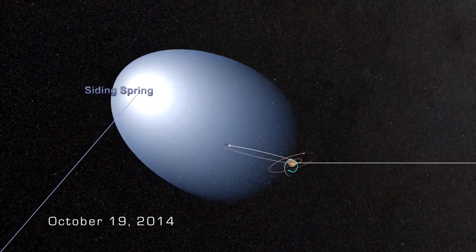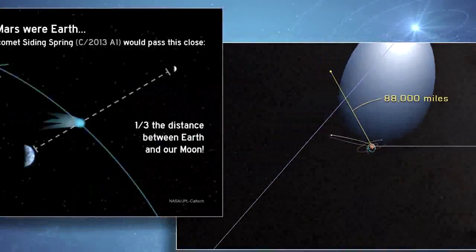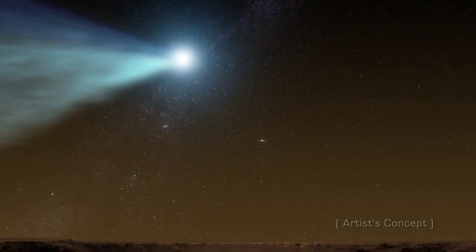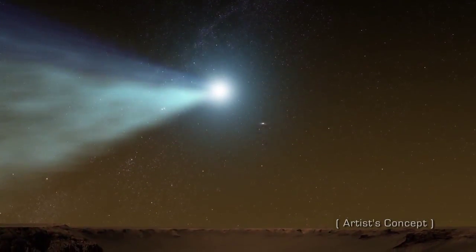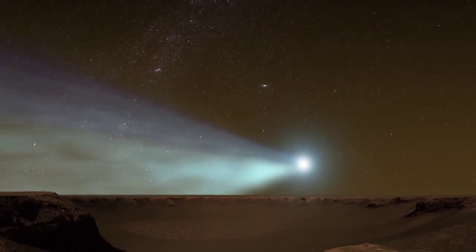On October 19th, Comet Siding Spring will come within 88,000 miles of the Red Planet, roughly one-third of the distance from the Earth to the Moon. Anyone standing on Mars might be treated to a spectacular view, with the comet's long tail of gas and dust dominating the northern skies.